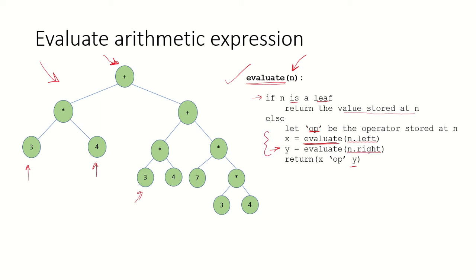Let's see how this works. First, we are at node n1. We check whether it is a leaf — no, it is not a leaf. So what is the operator? The operator at this node is the addition operator. The next statement is to evaluate its left subtree, so this is a recursion call to the same function and we go to the left subtree.